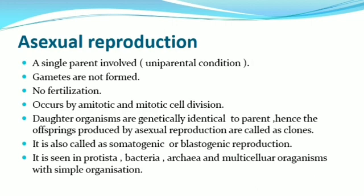As the cells divide by mitosis, all daughter organisms are genetically identical to the parent organism. Hence, the offspring produced by asexual reproduction are called clones. As the offspring are produced by the division of body cells, this reproduction is otherwise called somatogenic or blastogenic reproduction. This type of reproduction is seen in single-celled organisms called protists, bacteria, archaea, and multicellular organisms with simple organization.